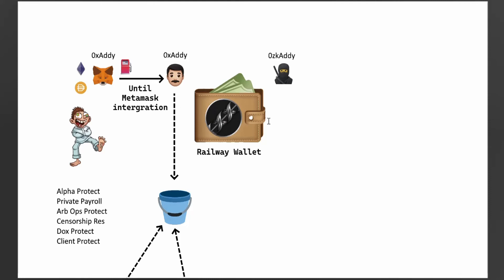So you send the tokens to this 0x address, and then — simplifying here — all of everyone's tokens basically get put into the smart contract together. They're all in a big pool, like a giant wallet filled with tons of different tokens. The Railgun smart contracts now hold all of those tokens, but you still command them through your 0x address wallet.